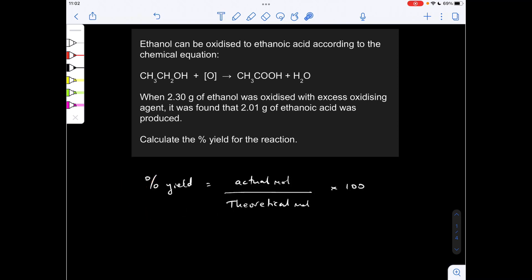What we need to do is work out the actual moles of product and then divide that by the theoretical moles of product that could have been formed from the reaction and express those as a percentage. So we'll go through that now.